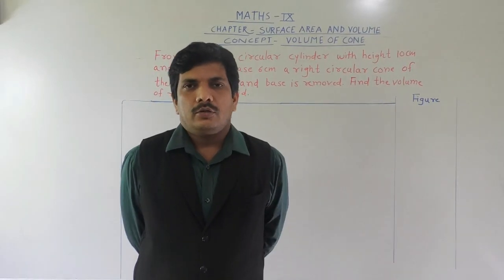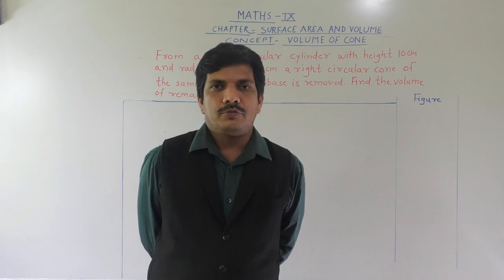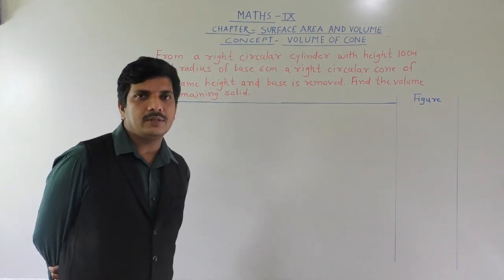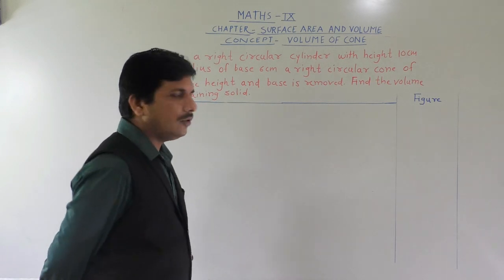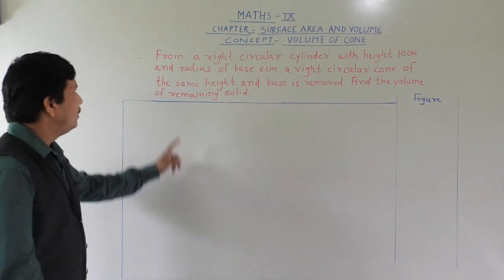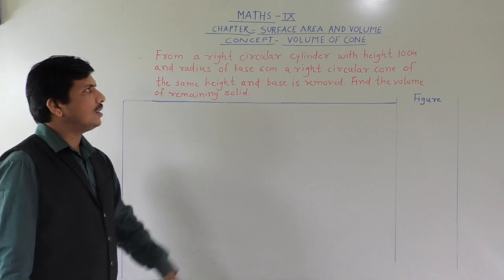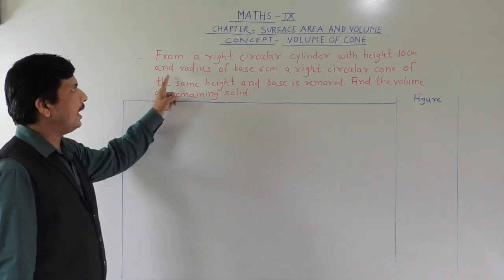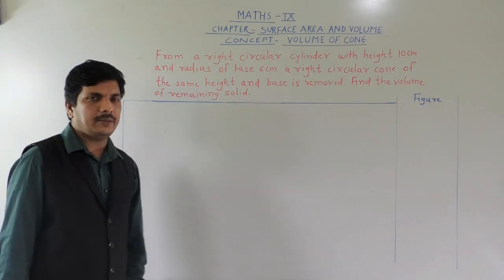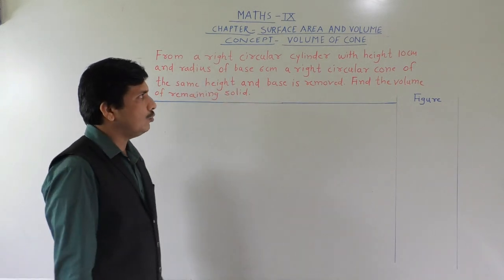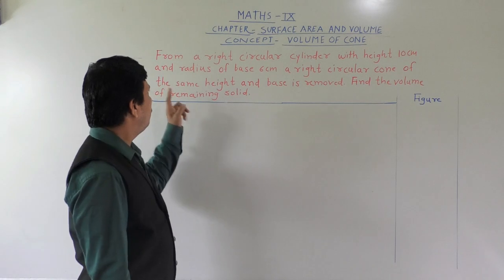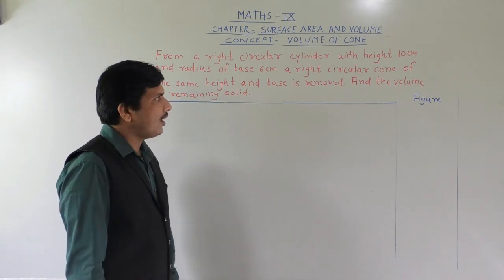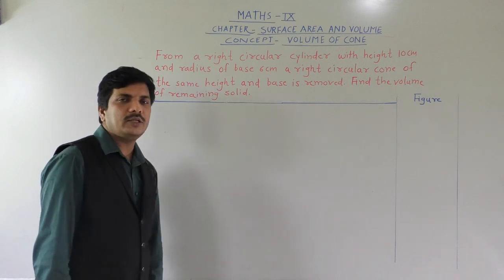Hello everybody. Today we are going to see some problems which depend on the concept of volume of cone. Already we have seen some problems. Today's first problem is: from a right circular cylinder with height 10 centimeter and radius of base 6 centimeter, a right circular cone of the same height and base is removed. Find the volume of the remaining solid.